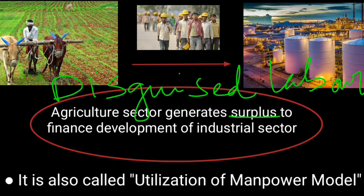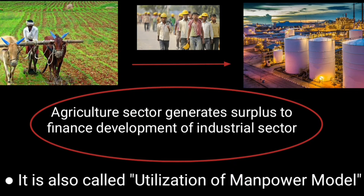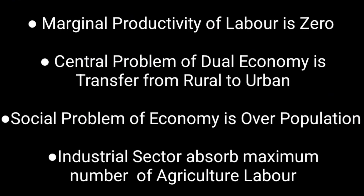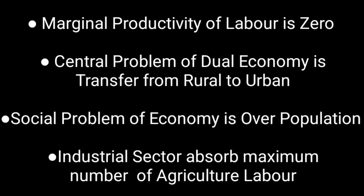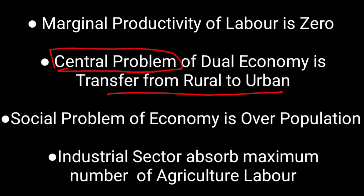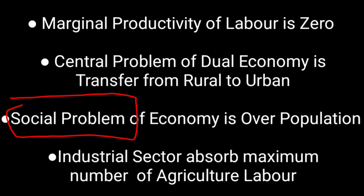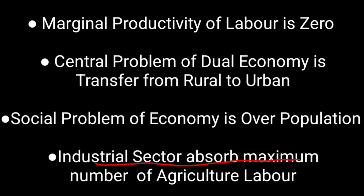The term surplus stands for disguised labour, and therefore it is also called the utilization of manpower model. The model assumes that the marginal productivity of labour is zero. The central problem of a dual economy is the transfer of labour from the rural to the urban sector. The social problem of an economy is overpopulation, and it is the industrial sector that will absorb the maximum number of agricultural labour — meaning the disguisedly unemployed people.